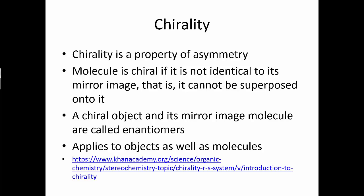This leads us to chirality. Chirality is the same idea as mirror images — it is a property of enantiomers. Chirality is a property of asymmetry. A molecule is chiral if it's not identical to its mirror image — that is, it cannot be superposed onto it. If a chiral object and its mirror image are a pair, then those are called enantiomers. It applies to objects as well as molecules.